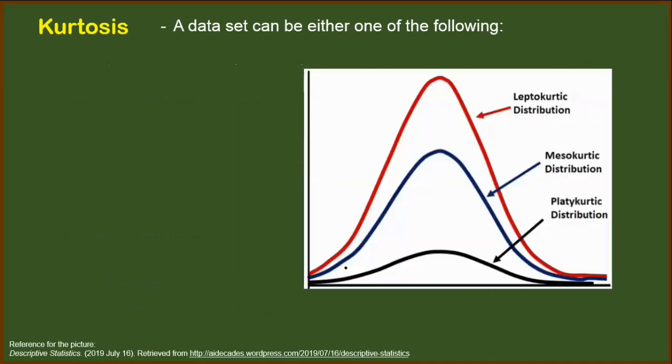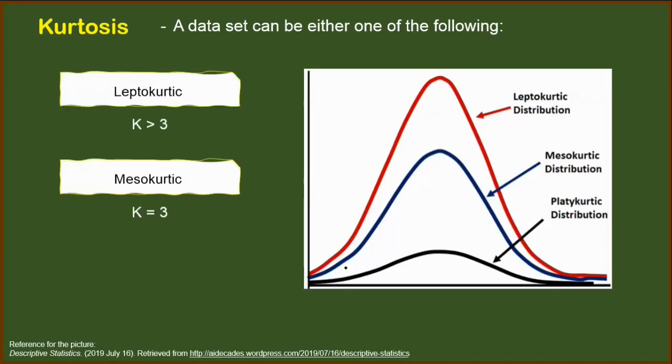And just to recall, a data set can either be one of the following in terms of its kurtosis. If the kurtosis is equal to 3, then we have a mesokurtic distribution. If it is greater than 3, then we have a leptokurtic distribution. And finally, if the kurtosis is less than 3, then we have a platykurtic distribution. Now, let's go to the example.